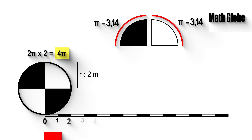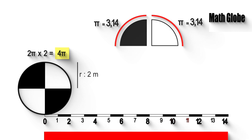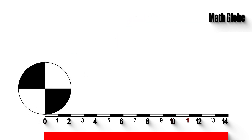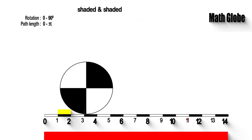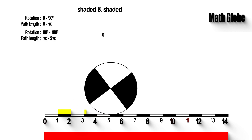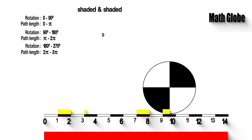Let's label the left-hand end of the path as 0 meters. As the wheel rotates once, the first shaded section of the wheel touches the path between 0 and π meters. Then, as the wheel continues to rotate, the second shaded section of the wheel touches the path between 2π meters and 3π meters.